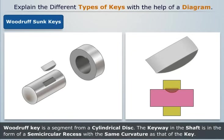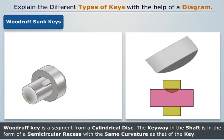Woodruff key is a segment from a cylindrical disc. The keyway in the shaft is in the form of a semicircular recess with the same curvature as that of the key. The lower portion of this key fits into the circular keyway in the shaft.